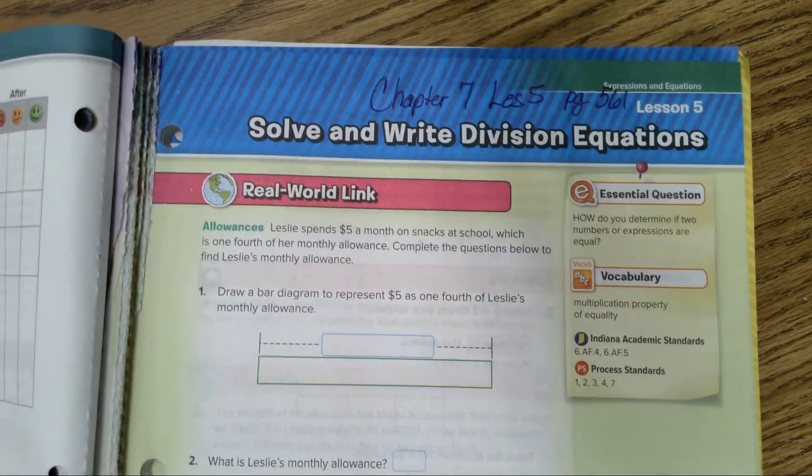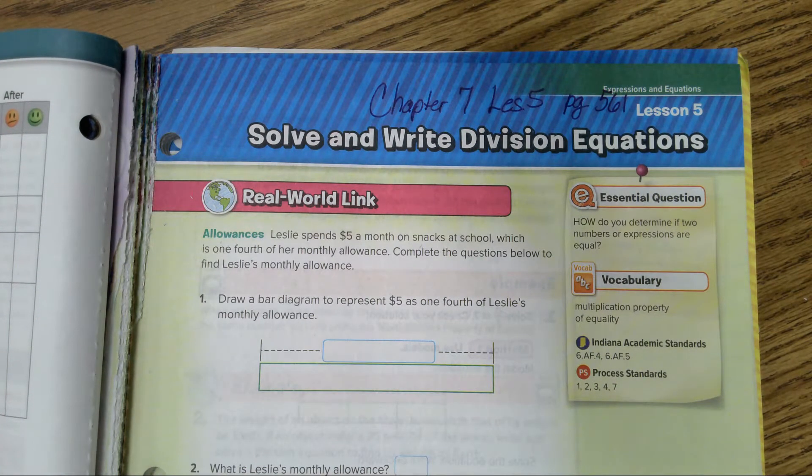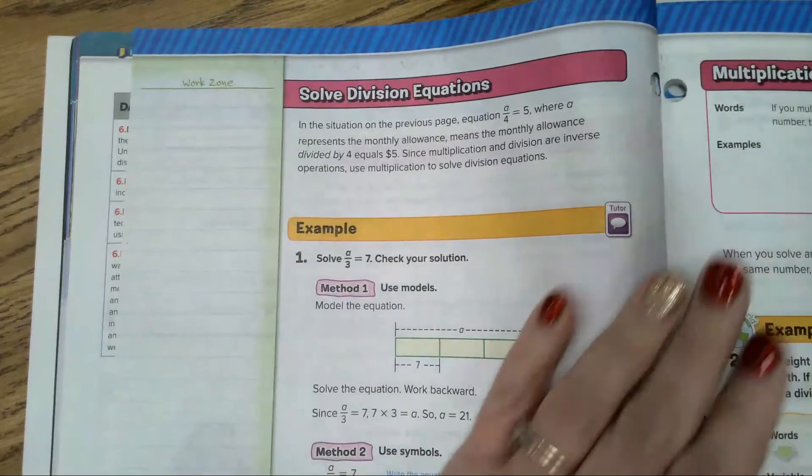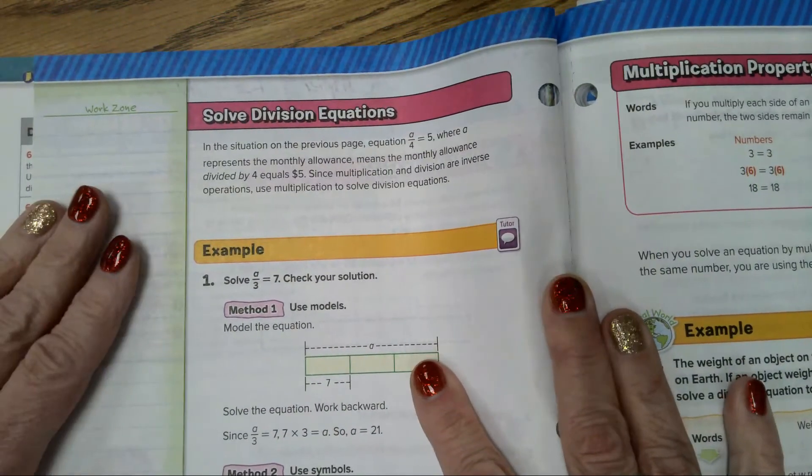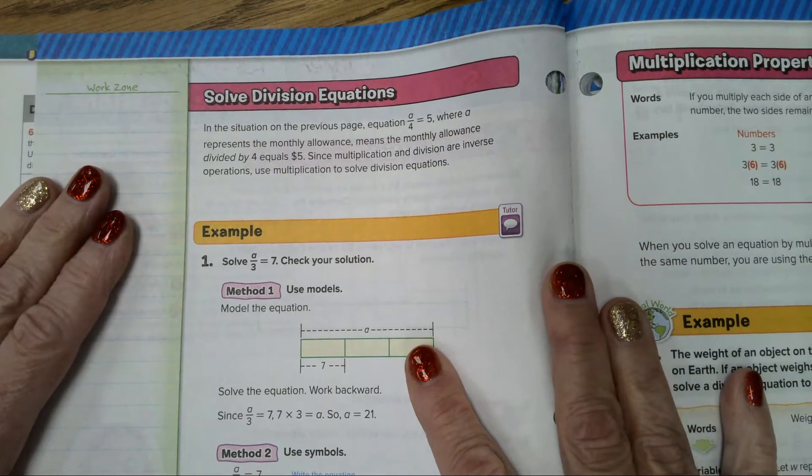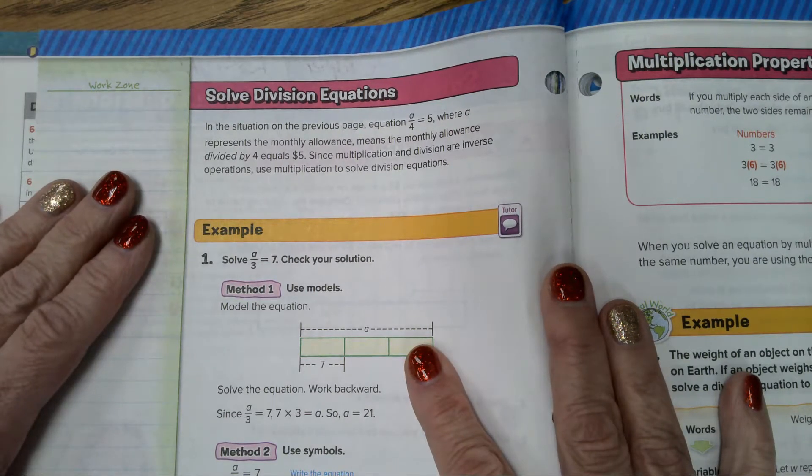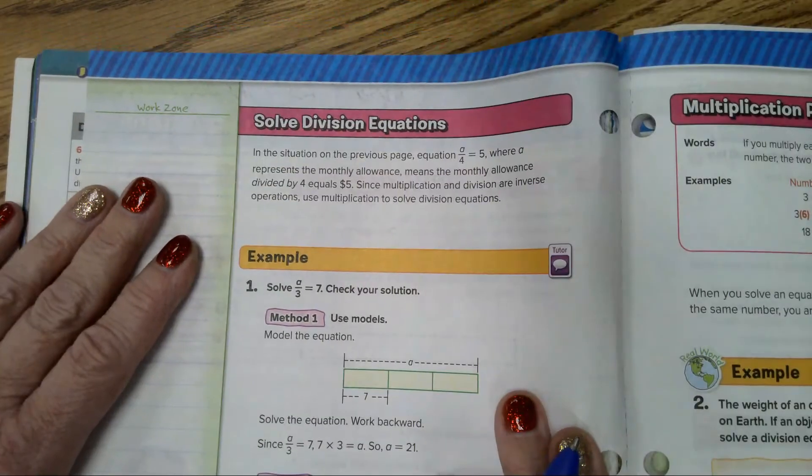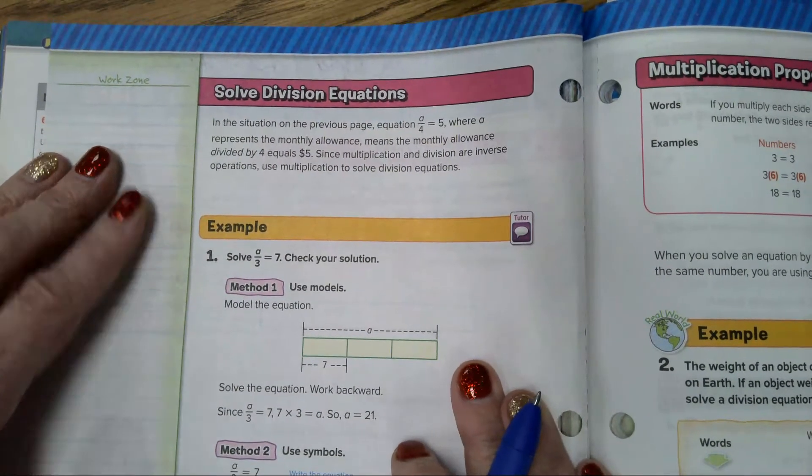We are going to learn how to solve and write division equations today. When you get to page 561, we're not going to spend time doing the real world link. We're going to go right into the problems. These are really pretty simple until you get into the decimal and fraction ones. The important thing is you need to show your steps. Please write everything that I write down here. Don't skip any steps. You are learning the process of writing things in algebra, which is in your near future.